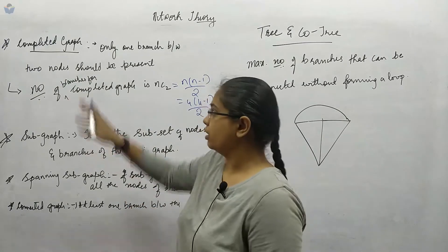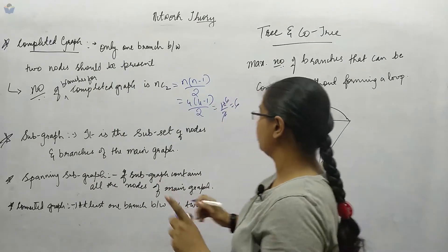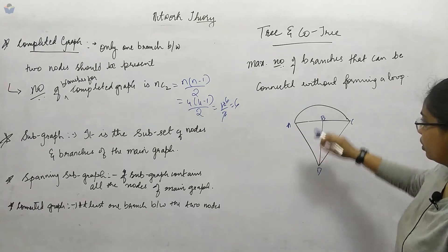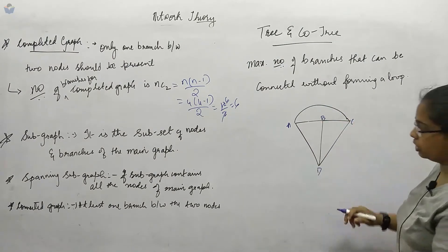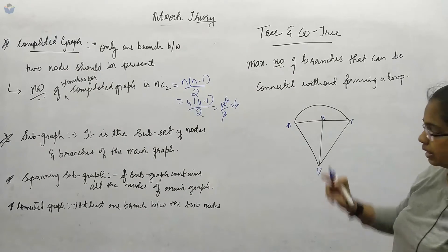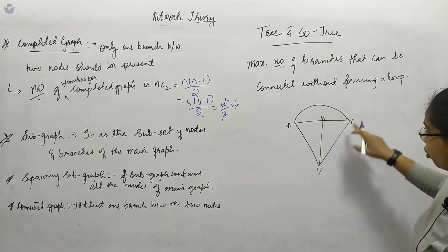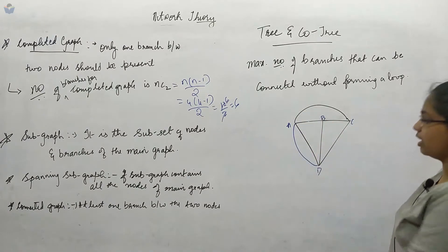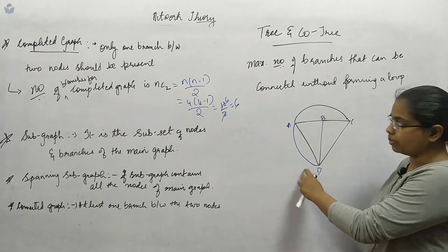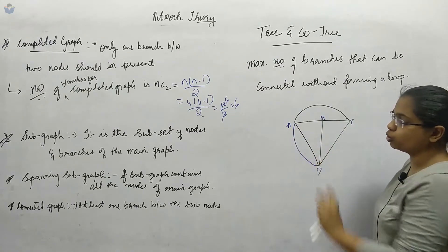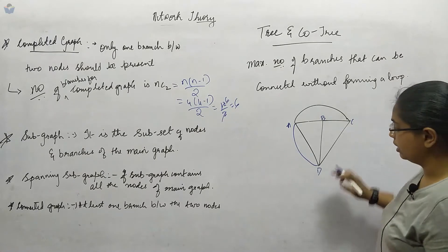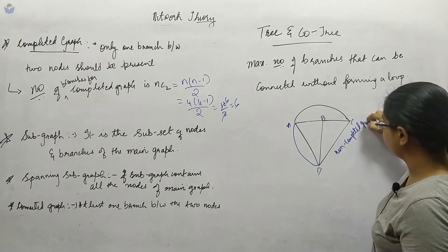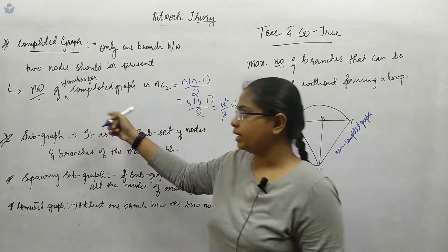So a completed graph means only one branch between any two nodes. For nodes A, B, C, D — between every pair of two nodes there is only one branch, so it is a completed graph. If between nodes A and D there were two branches, it would not be a completed graph; it would be a non-completed graph.